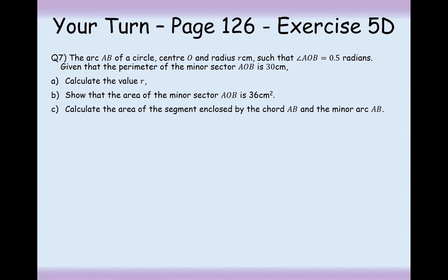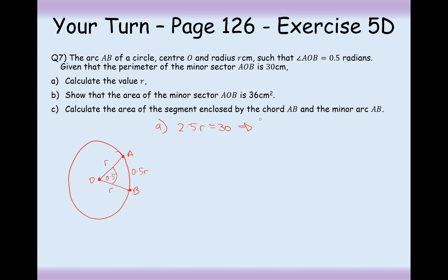Your turn — pause the video and try question 7. The arc of a circle AB has radius R such that angle AOB equals 0.5 radians. Given that the perimeter of the minor sector is 30 — that's R plus R plus 0.5R equals 30 — so 2.5R equals 30. Dividing by 2.5 gives R equals 12 centimetres.